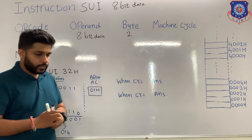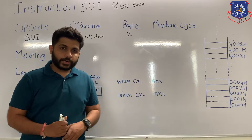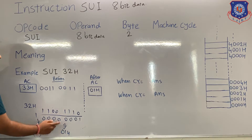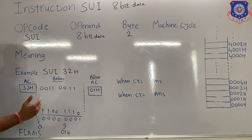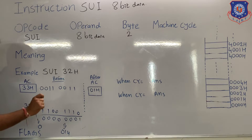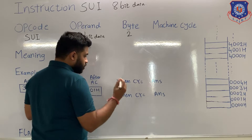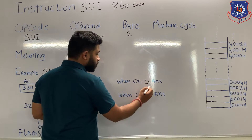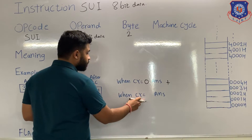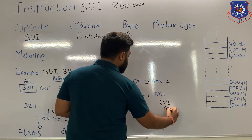In the subtract instruction, you have to pay attention to the carry. After the subtract instruction is executed, if the content of the carry flag is 0, it means the answer is positive and it is in original form. If after performing the subtract instruction the content of the carry flag is 1, it means the answer is negative and it is in 2's complement form.